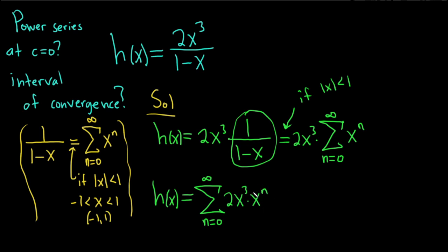And now we can add the exponents, right? Because we're multiplying and the bases are the same. So this is equal to the infinite sum as n runs from 0 to infinity of 2x, and then we just add these, n plus 3. So here we go, n plus 3. And so this would be the final answer. This would be the power series representation of this function.